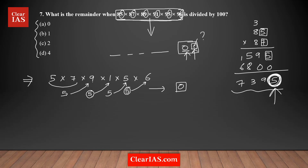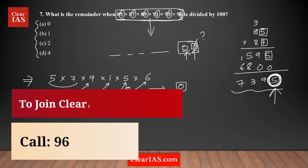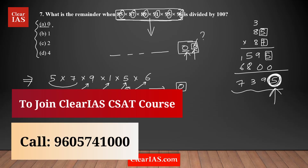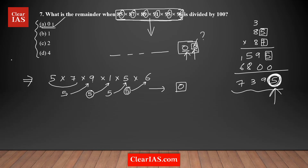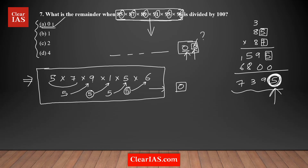The unit digit of the entire product is 0. That means the last two digits are both zero — it's a multiple of 100. When you divide a multiple of 100 by 100, the remainder is exactly 0. There is also a shortcut you can use, since this multiplication is a bit time-consuming.